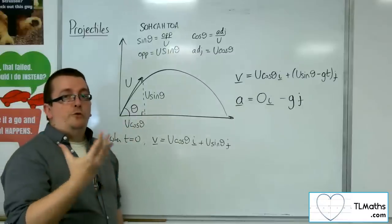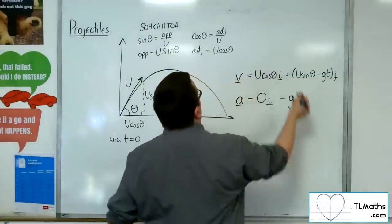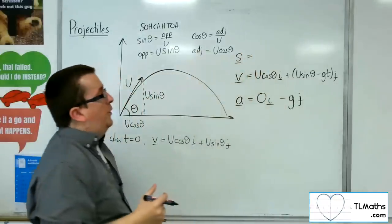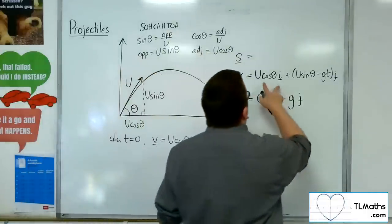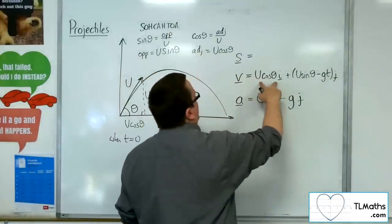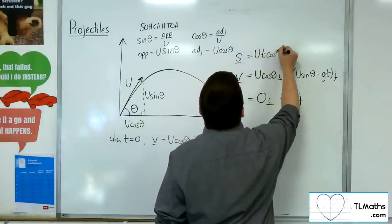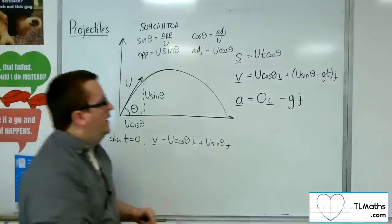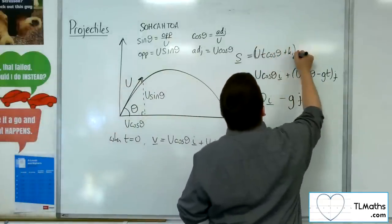Then, if you wanted to find its highest point, its maximum height, then I'm going to need an equation for the displacement. So, the displacement we get from the velocity by integrating. So, if we integrate the u cos theta, we're going to get u t cos theta. I'm going to put the t there because it's nicer working it there. Plus a constant value. Let's call it k1 i.